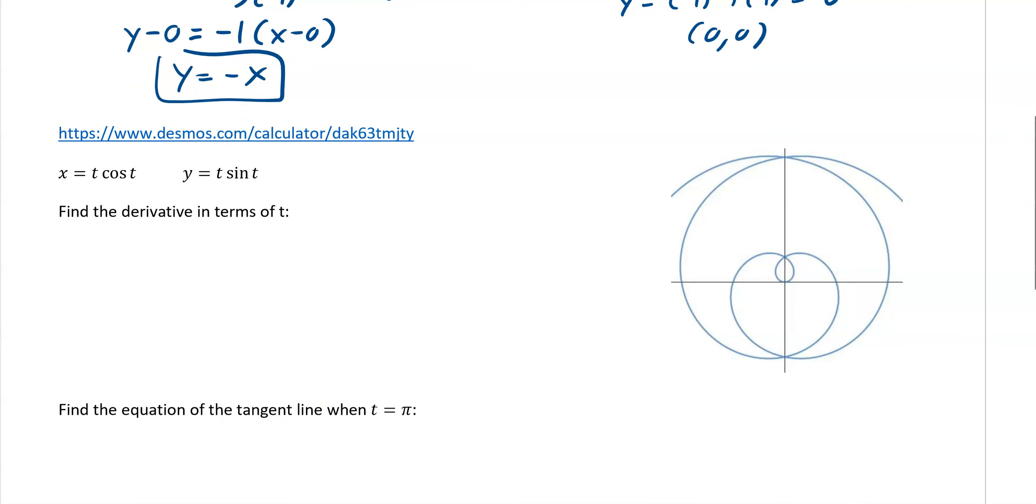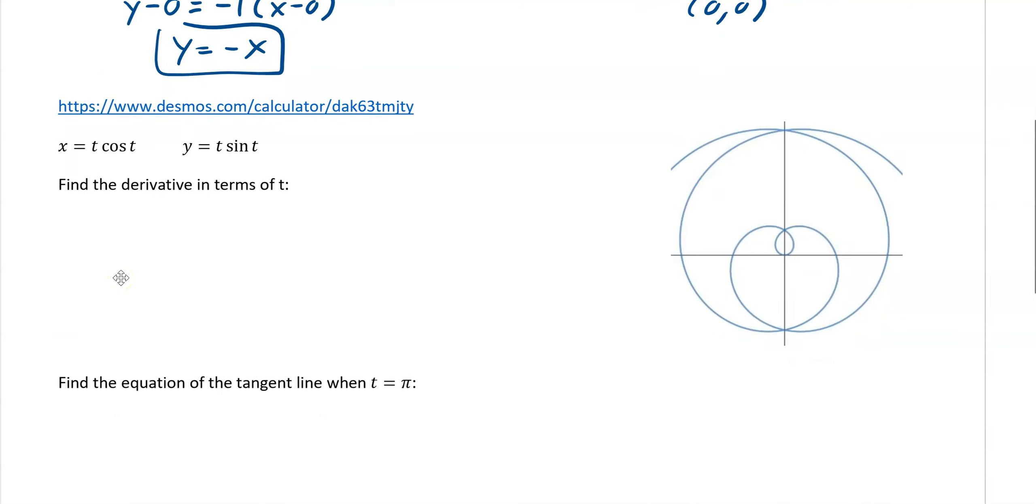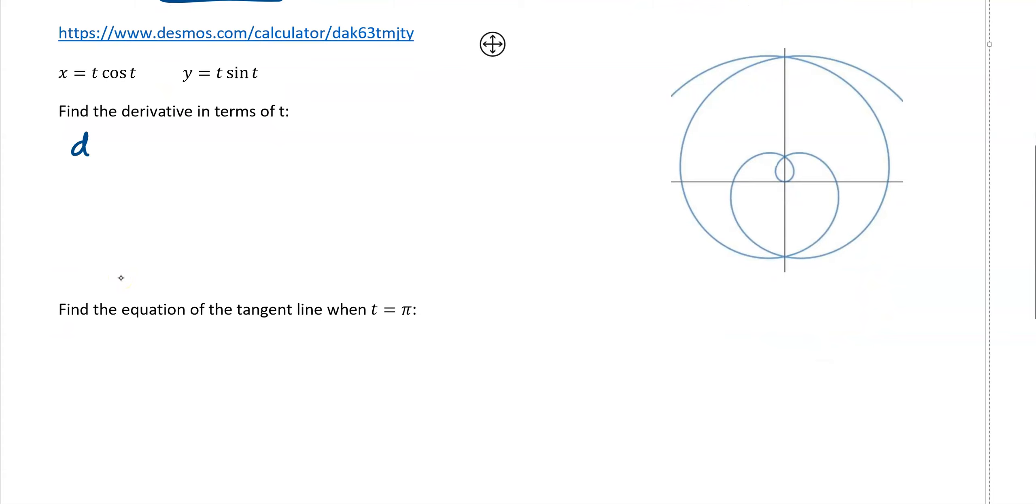All right, let's try another one now. So the same thing, we have to find first our x prime, so dx/dt, and this is now product rule. So derivative of t would be 1, and it's cosine t, plus t, and then the derivative of cosine is negative sine of t. And then we would get now, this would become cosine t minus t sine of t.